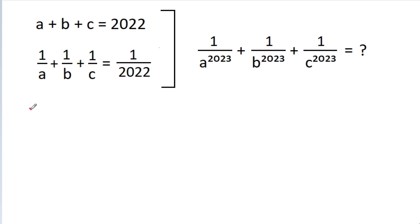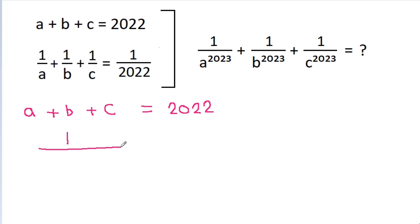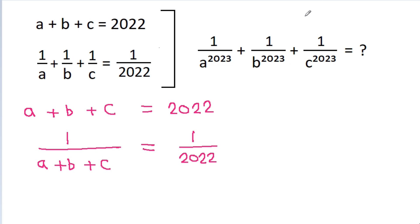So we have A plus B plus C is equal to 2022, and 1 by A plus B plus C is equal to 1 by 2022. And also we have given that 1 by A plus 1 by B plus 1 by C is equal to 1 by 2022.